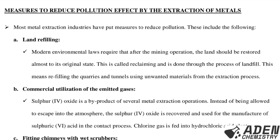Next, let's look at measures to reduce the pollution effects of metal extraction. Most metal extraction industries have put measures in place to reduce pollution. Number one: land refilling. Modern environmental laws require that after mining operations, the land should be restored almost to its original state — this is called reclaiming, and it is done through the process of landfill, which means refilling the quarries and tunnels using unwanted materials from the extraction process.